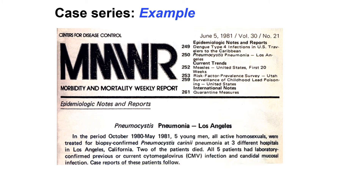This is a historical case series paper published in 1981 in the Morbidity and Mortality Weekly Report. In this case series, they described a group of five young men — all active homosexuals — who were treated for biopsy-confirmed Pneumocystis carinii pneumonia at three different hospitals in Los Angeles, California. These five patients presented during October 1980 to May 1981, two of them died, and all five had laboratory-confirmed previous or current cytomegalovirus infection and candidal mucosal infection.